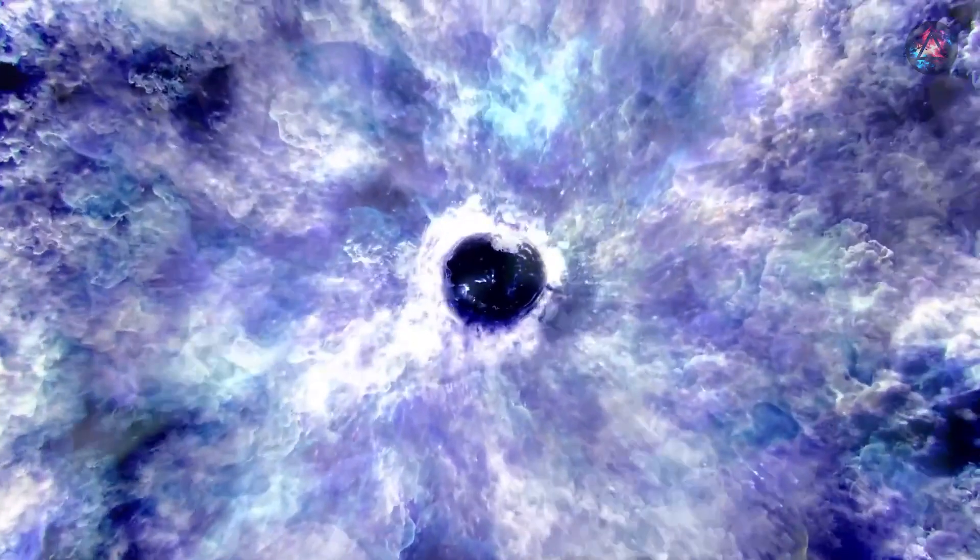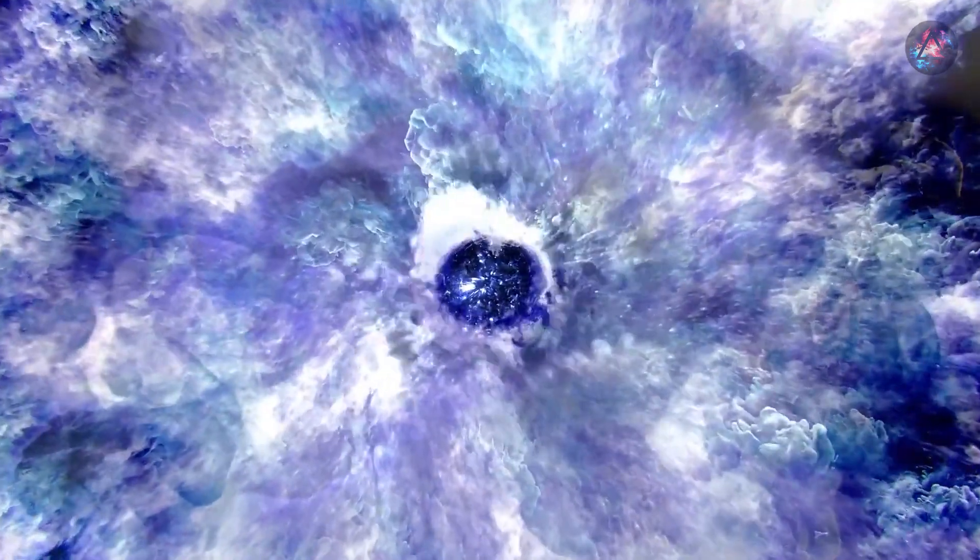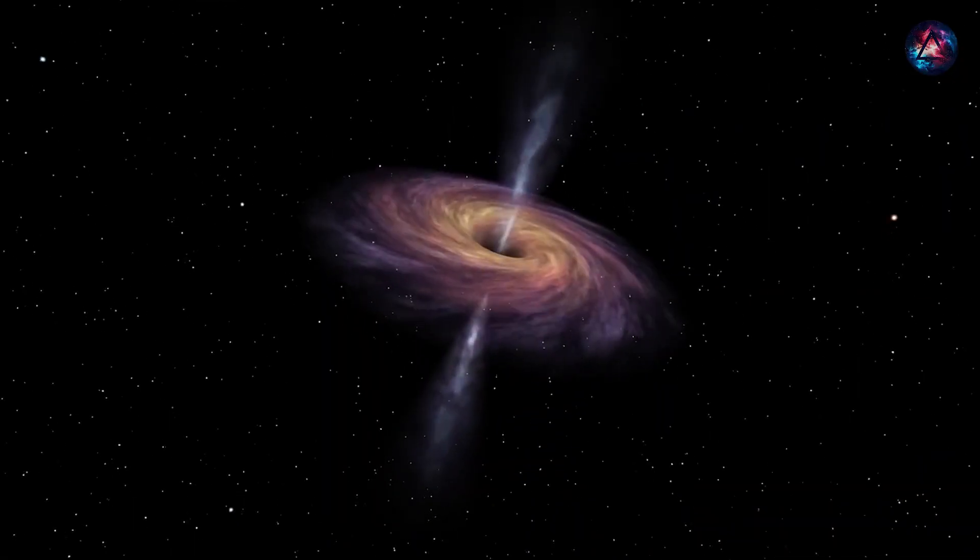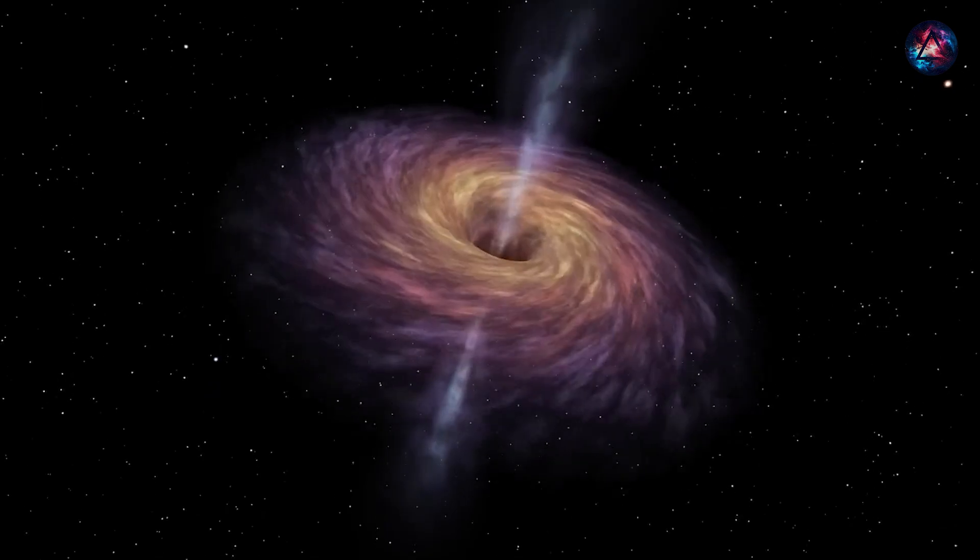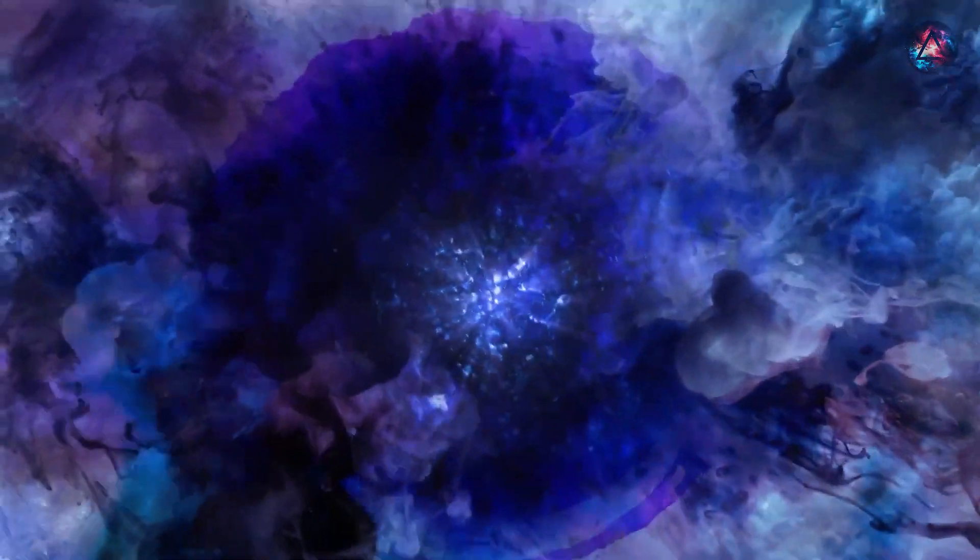If a collapsing star forms a black hole, the sudden stop of the neutrino stream could signal this phenomenon. Astronomers could identify potential black hole locations by observing blank spaces in lists of known stars.